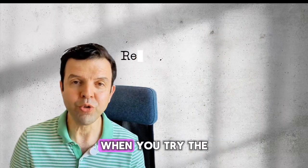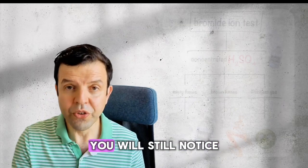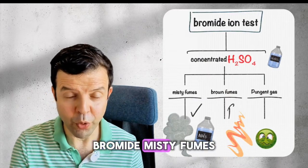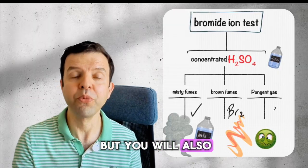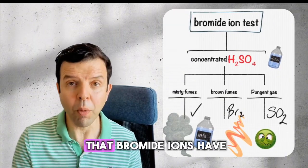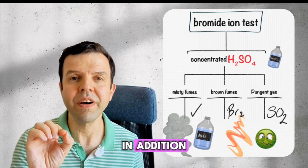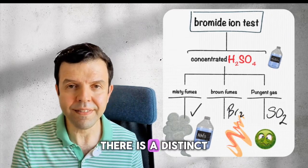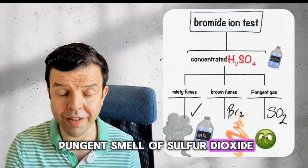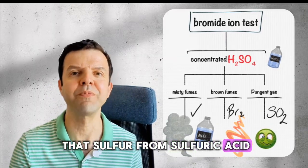When you try the same reaction with bromide, you will still notice the hydrogen bromide misty fumes, but you will also observe bromine — a sign that bromide ions have been oxidized. In addition, there is a distinct pungent smell of sulfur dioxide, which indicates that sulfur from sulfuric acid has been reduced.